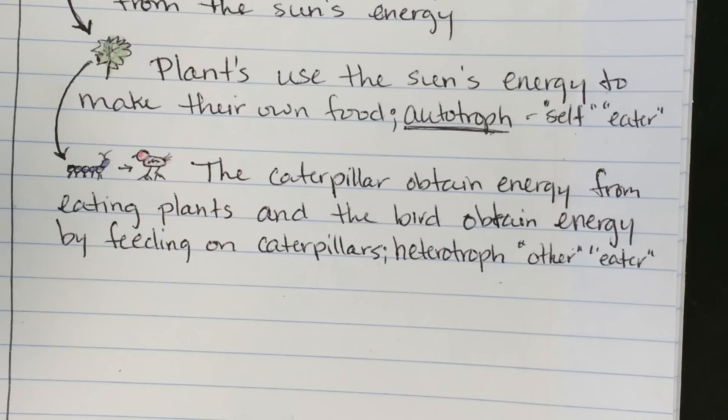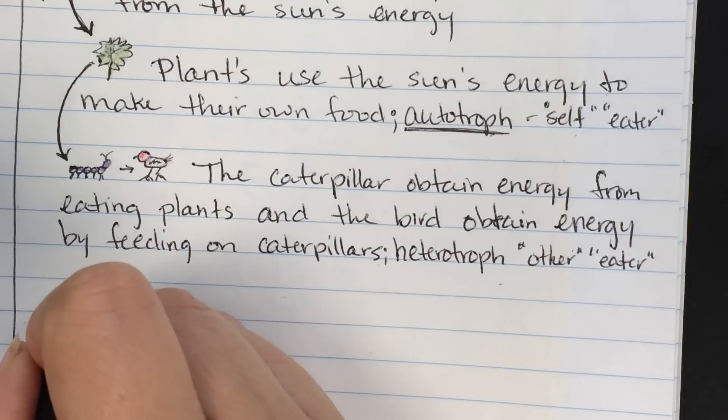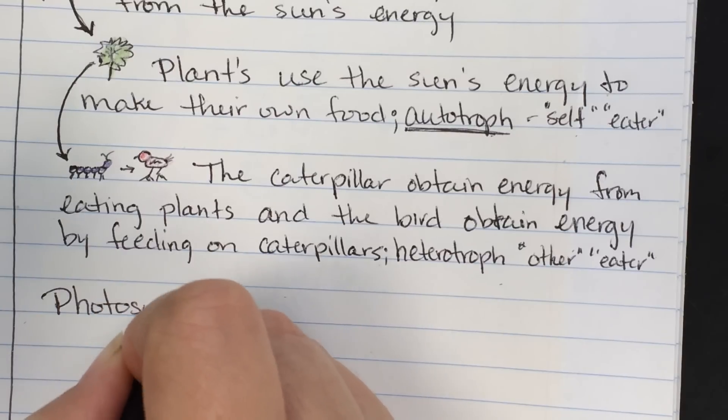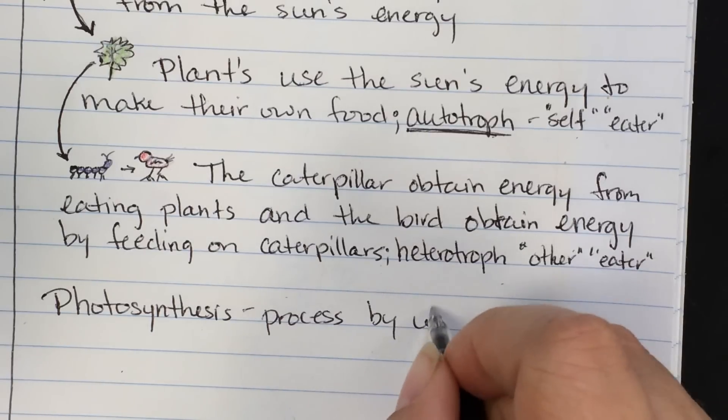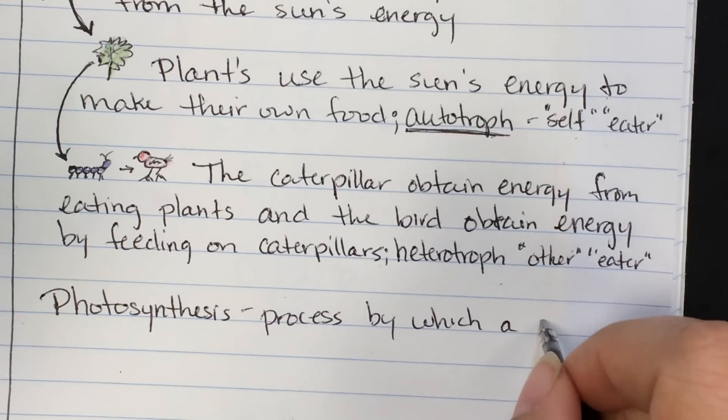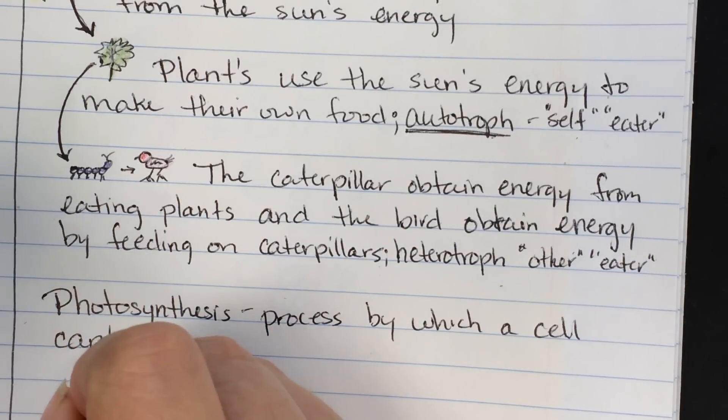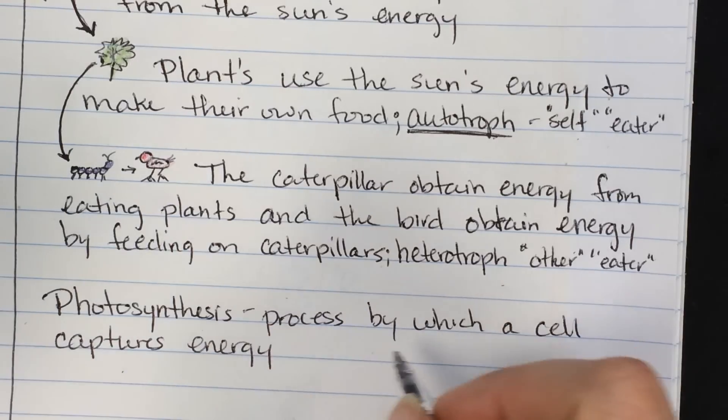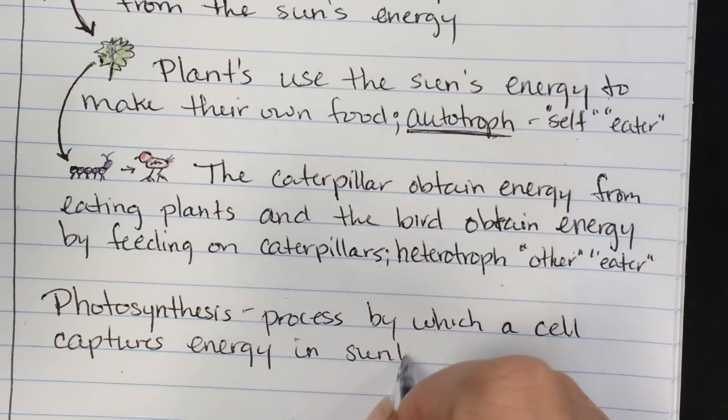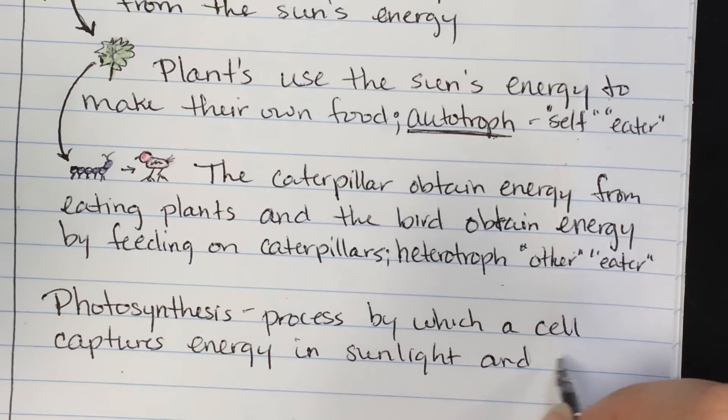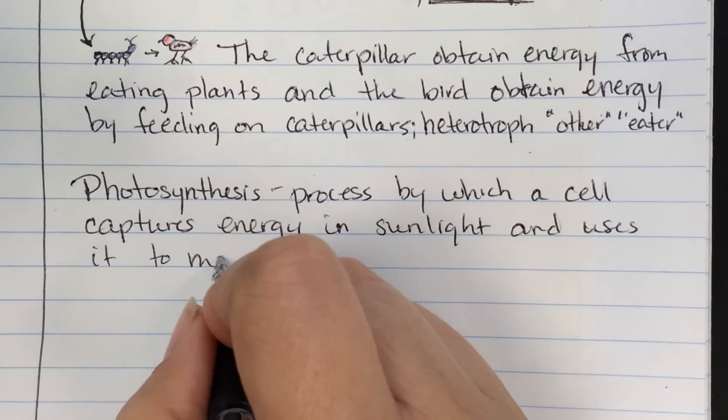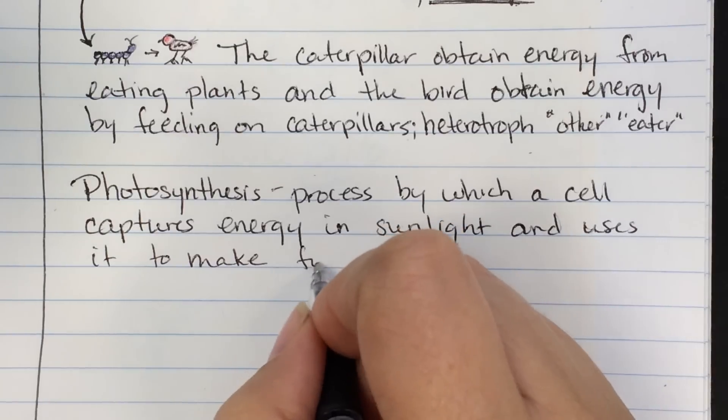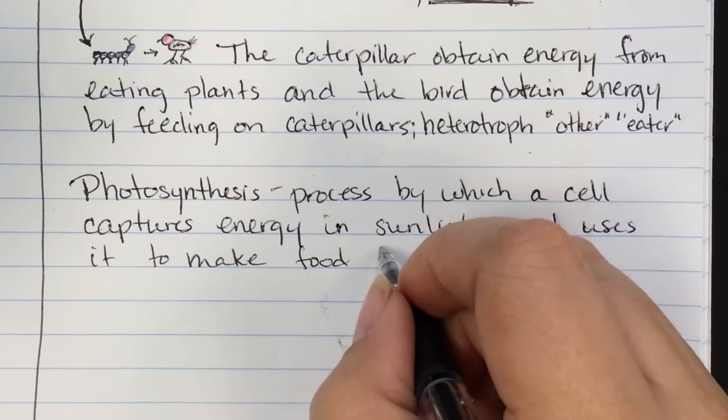So let's talk about what is going on in our process. In order to have the energy in the first place, there has to be photosynthesis. Photosynthesis is the process by which a cell captures energy in sunlight and uses it to make food. Either for the plant itself or for other creatures who would like to consume it.